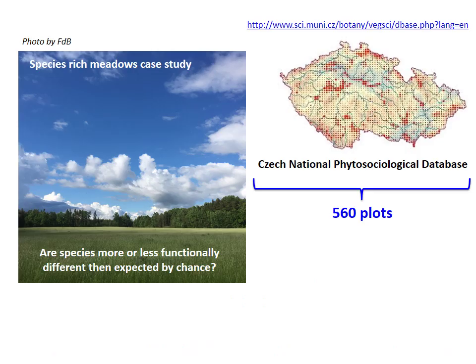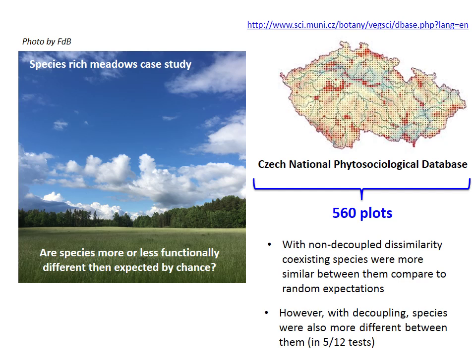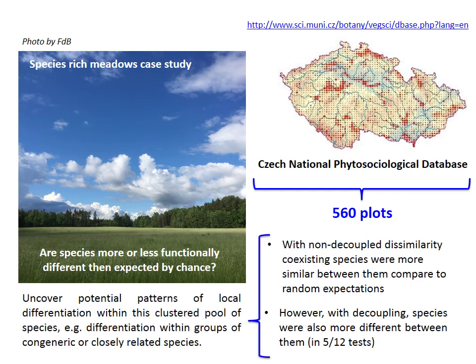We then applied our framework to a large dataset of 500 species-rich meadow plots extracted from the Czech National Phytosociological Database, using traits from the Leda database and phylogenetic information from Daphne. Our question was whether coexisting species were more or less functionally different from each other compared to random expectations. Interestingly, species appeared to be, in most of the meadows, functionally and phylogenetically more similar than expected by chance. However, using decoupling, in 5 out of 12 tests, functional dissimilarity between species was greater than expected by chance, indicating that coexisting species tended to differentiate particularly within closely related species, like within graminoids.